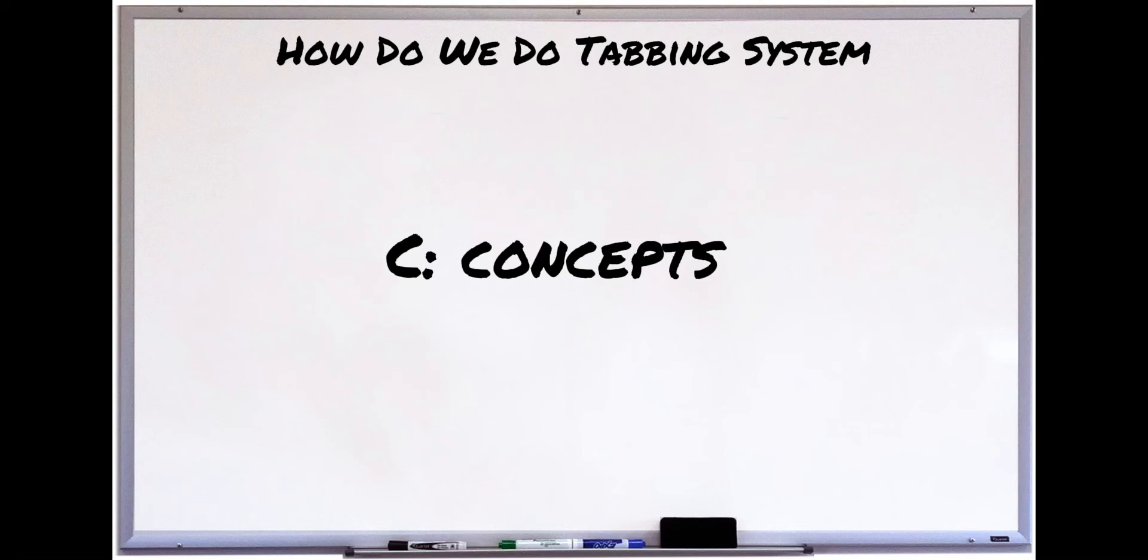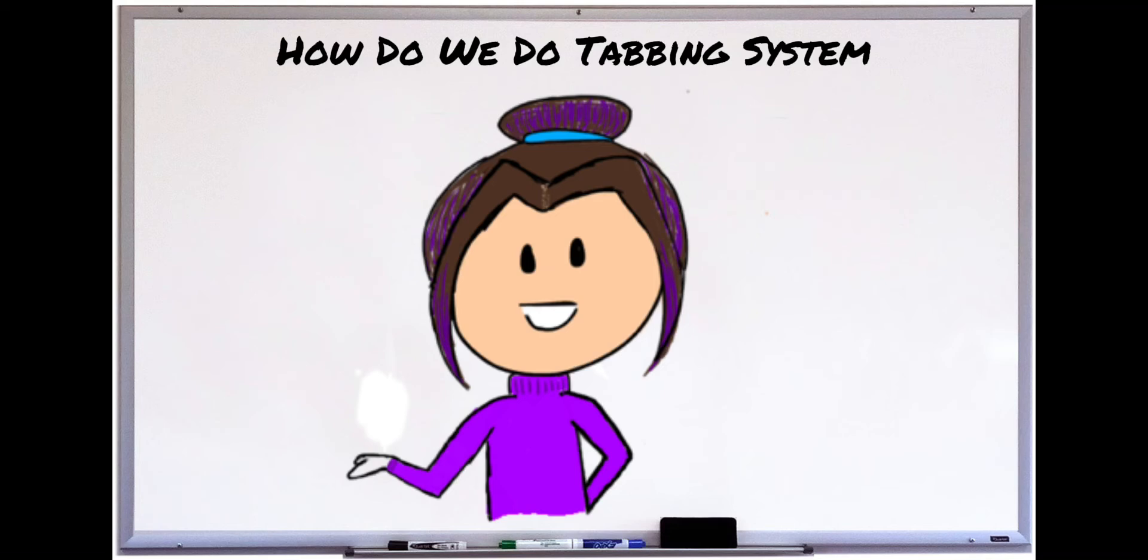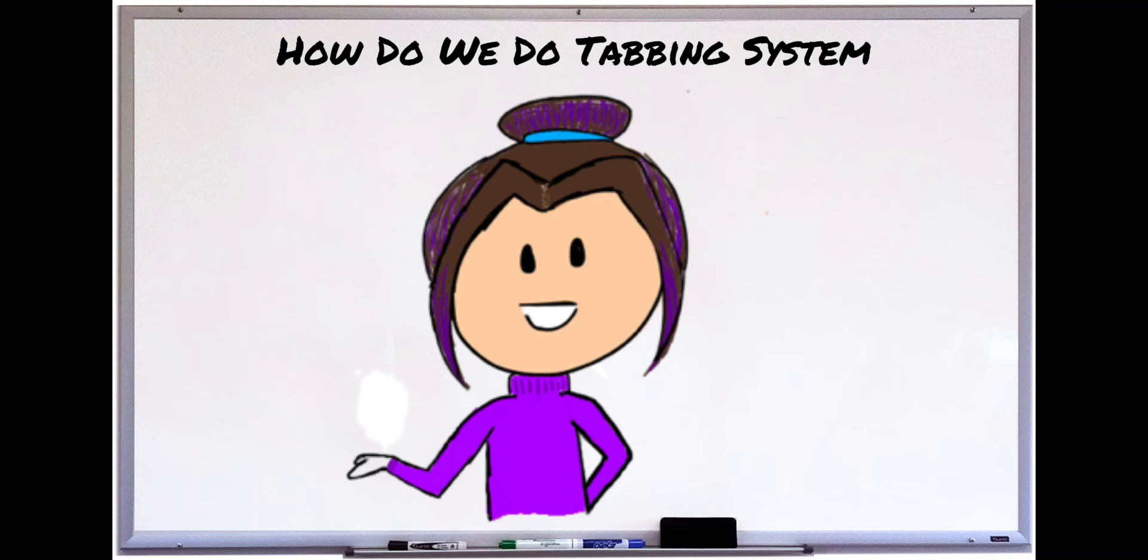The next letter is C, which is slightly less common. If a sentence describes a certain concept or conceptual thing that I feel Coburn might ask in a quiz or on a test that's multiple choice, and I think this concept is very important, I'll highlight the concept and put a tab right next to the highlighted concept.